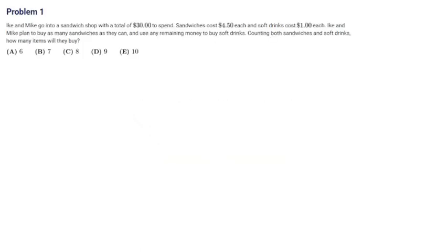Problem 1 states: Ike might go into a sandwich shop with a total of $30 to spend. Sandwiches cost $4.50 each and soft drinks cost $1 each. Ike might plan to buy as many sandwiches as they can and use any remaining money to buy soft drinks. Counting both sandwiches and soft drinks, how many items would they buy?